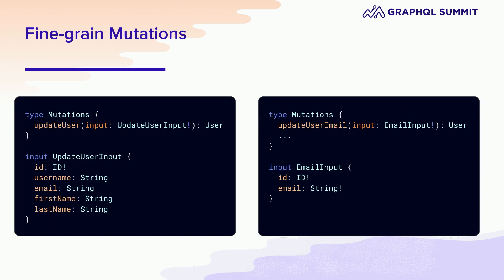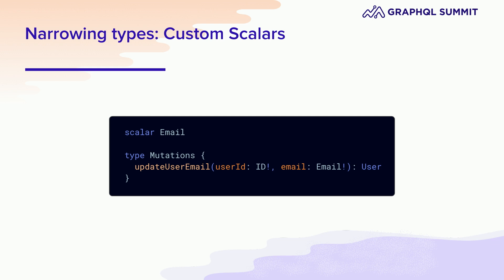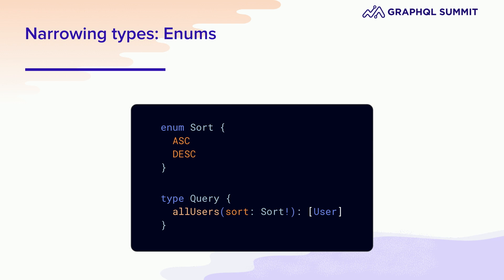Looking at a different flavor of mutation — updates — the advice is to add finer-grained mutations, specifically when you're updating. For the example of update user email, it's much more explicit. Our inputs are smaller and we can require everything. Another helpful tip is to take advantage of custom scalars. We've added an email scalar, which helps narrow the type system, makes it clearer what's happening in our API, and really signals the functionality to consumers. Similarly, take advantage of enums for the same reason — to help narrow your types, define the use case, and make it very clear for consumers.